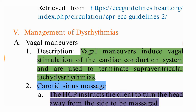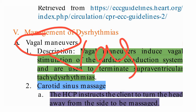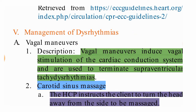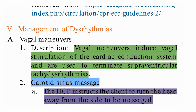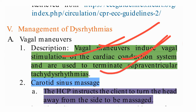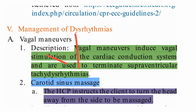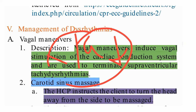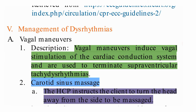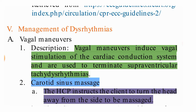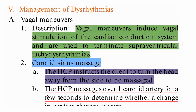First is vagal maneuvers. In vagal maneuvers we perform vagal stimulation — we stimulate the vagus nerve. Vagal maneuvers induce vagal stimulation of the cardiac conduction system and are used to terminate supraventricular tachyarrhythmias. Vagal stimulation causes a decrease in heart rate, terminating supraventricular tachyarrhythmias including ventricular tachycardia and supraventricular tachycardia.